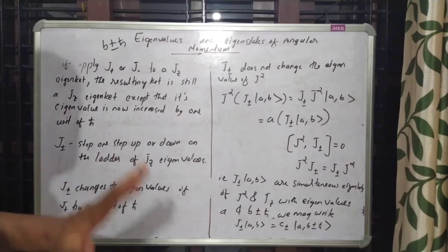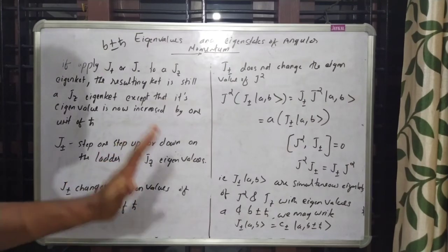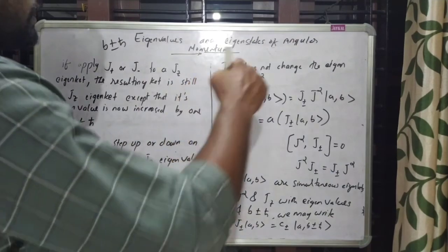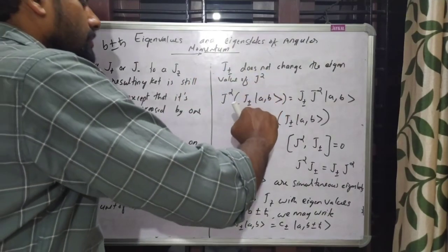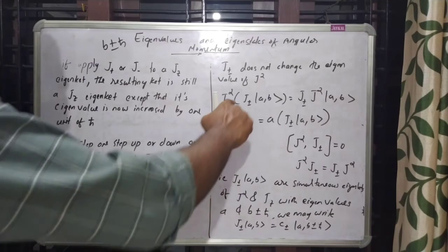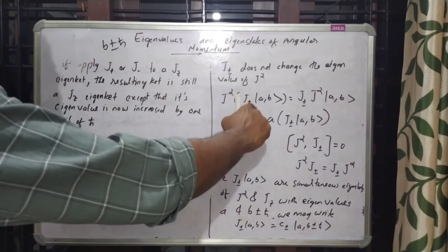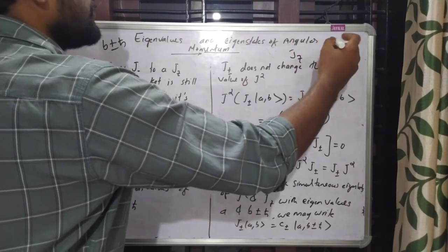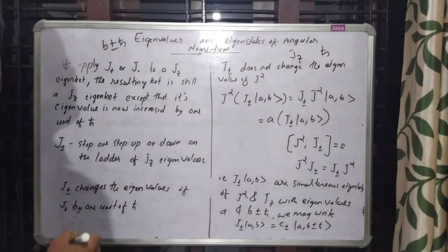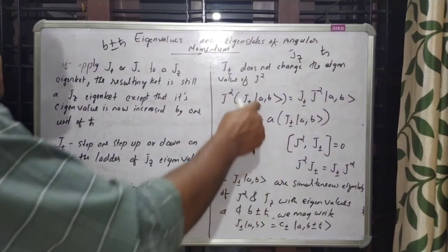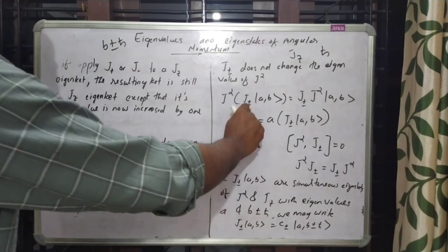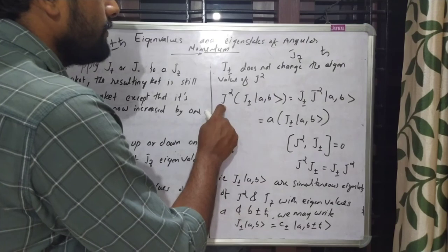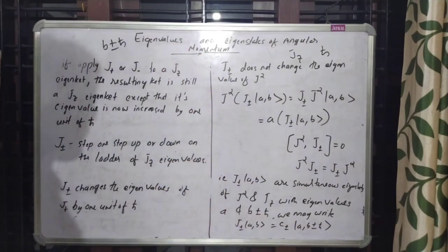In conclusion, the J± ladder operators increase or decrease the eigenvalue of Jz by one unit of ℏ, while the ladder operators J± do not change the eigenvalue of the operator J².